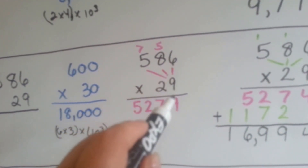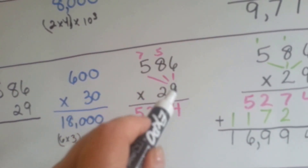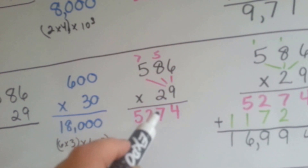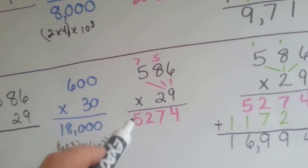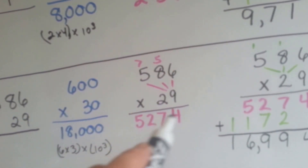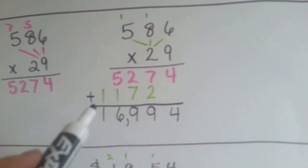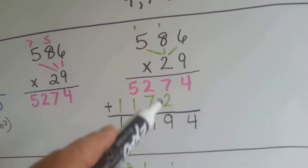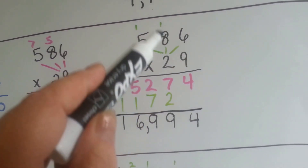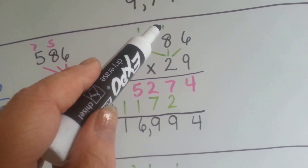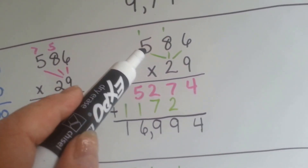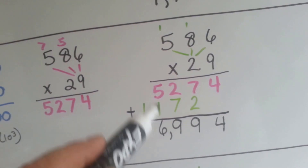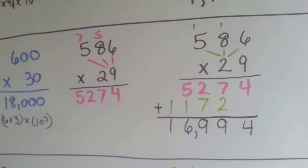All right. To do the ones place, we're going to multiply the ones, then the tens, then the hundreds. 9 times 6 is 54 — we carry the 5 and put the 4 down. 9 times 8 is 72, plus 5 is 77. 9 times 5 is 45, plus 7 is 52. So now we've got 5,274 from multiplying the ones place. Now it's the tens place turn. 2 times 6 is 12 — carry the 1, put the 2 down. 2 times 8 is 16, plus 1 is 17 — carry the 1, put the 7 down. 2 times 5 is 10, plus 1 is 11. Now we add it all up: the 4 drops down, 7 and 2 is 9, 2 and 7 is 9, 5 and 1 is 6, drop the 1 down — and our answer is 16,994.